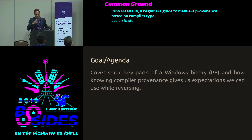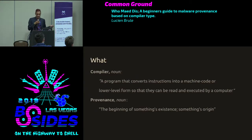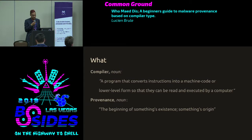Our goal: we're going to cover key parts of a Windows binary and know how compiler provenance gives us expectations we can use to reverse it — and how to leverage those expectations to reverse it faster. A compiler converts instructions into machine code so they can be read and executed by a computer. Provenance is something's origin — essentially where it came from and what made it.